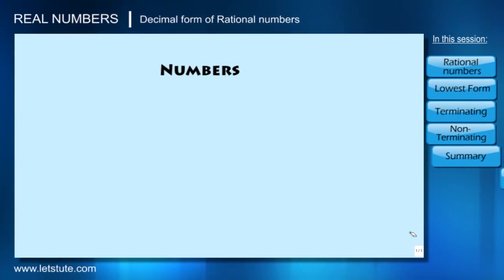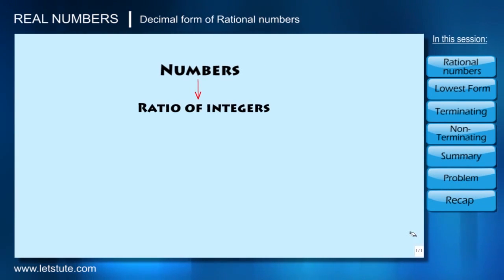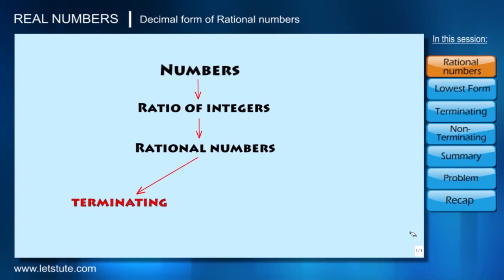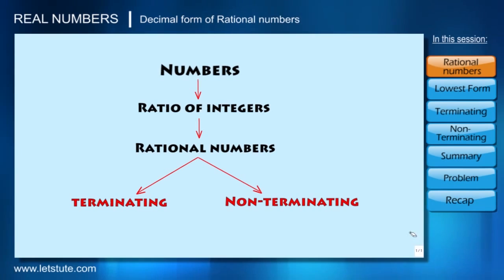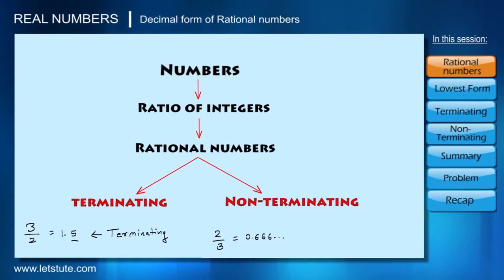From our previous session, we know that numbers in the form of a ratio of integers are called rational numbers, and the decimal form of every rational number either terminates or goes on repeating at certain digits — that is, non-terminating. For example, 3/2 is a rational number and its decimal form is 1.5, which terminates at 5. For 2/3, the decimal form is 0.6666... repeating forever — this is the non-terminating decimal form.